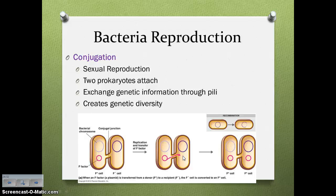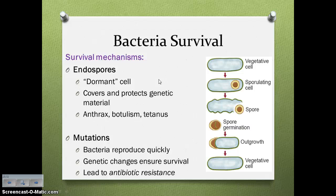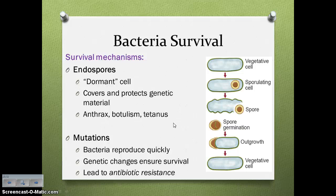Bacteria face harsh and changing environmental conditions, so they have survival mechanisms. One mechanism is the production of endospores, where the genetic material in a bacterium is surrounded by a protective covering and exists as a dormant cell. When conditions are favorable again, the spore germinates into an active bacterial cell. Examples include anthrax, botulism, and tetanus. Because bacteria reproduce so quickly, they're very susceptible to genetic mutations, which is actually beneficial — genetic variety allows them to survive diverse environments.